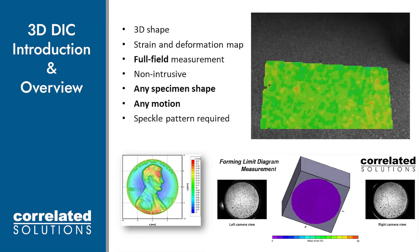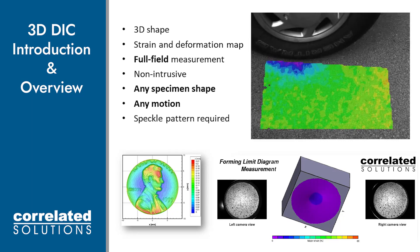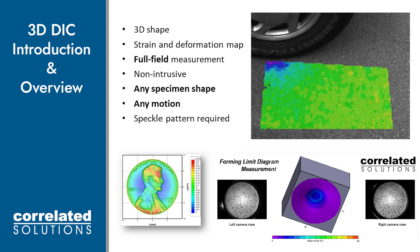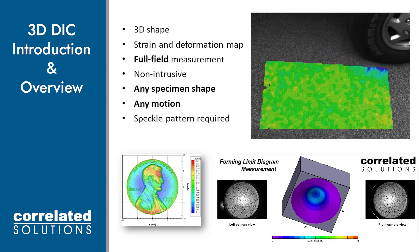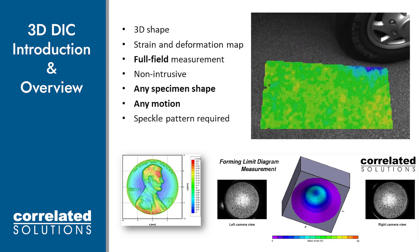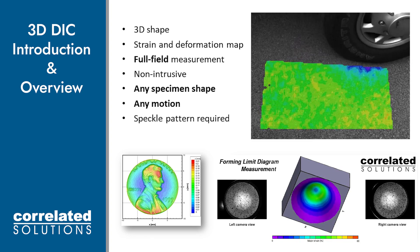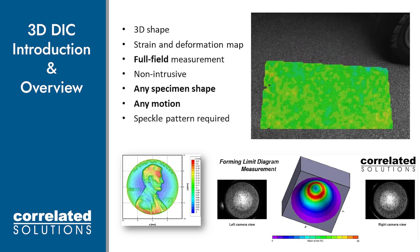So what is DIC? It's a non-contact method to calculate surface strains and deformations on nearly any sample. If the sample is visible to cameras and can have a speckle pattern applied to the surface, we can get data. At the top right, we see a patch of asphalt with a natural speckle pattern which is used to get data, and in the bottom right, we see a typical forming application. It's common to have forming limit diagrams created from this kind of data.